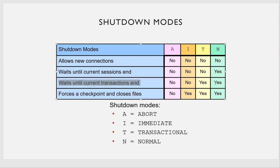With shutdown normal, it will wait forever for all users to disconnect. If users don't disconnect by themselves, the database will not go down. This is why you should never use shutdown normal — you could end up waiting for days.